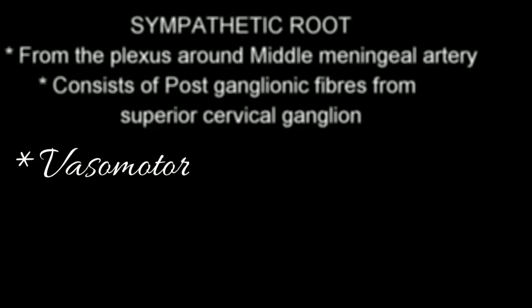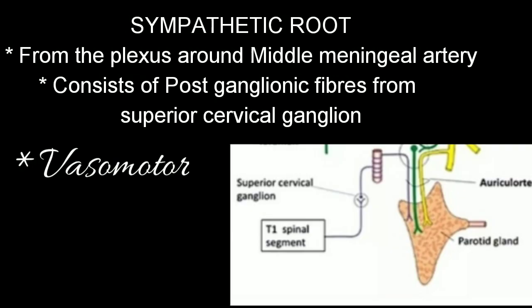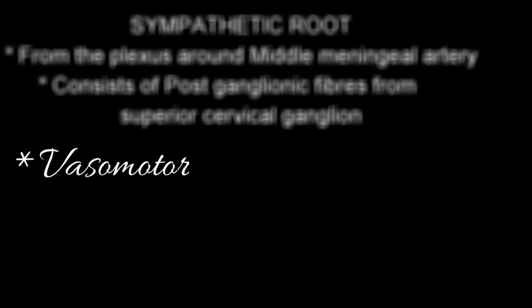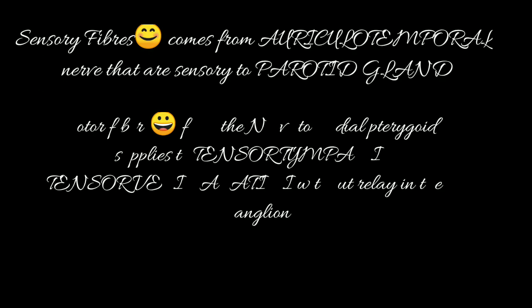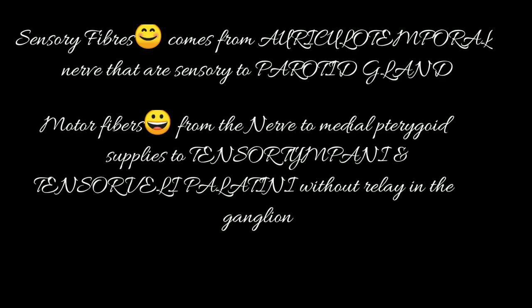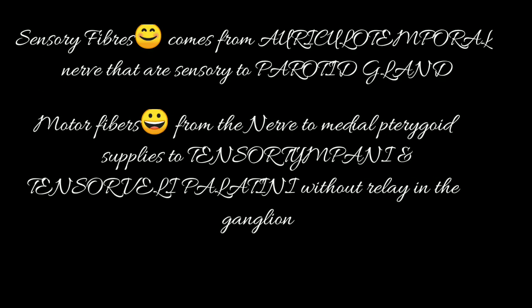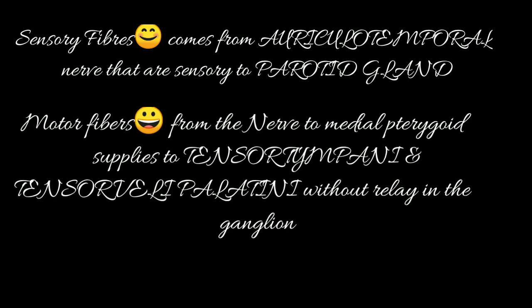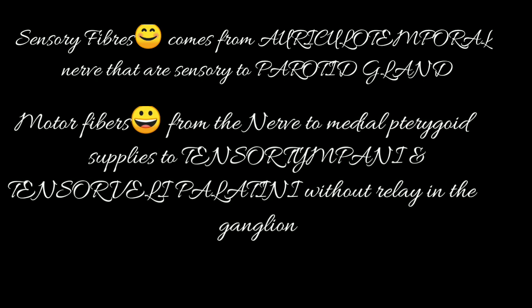The sympathetic root is derived from the plexus around the middle meningeal artery, consisting of postganglionic fibers from the superior cervical ganglion. Sensory fibers come from the auriculotemporal nerve, which is sensory to the parotid gland. Motor fibers are from the nerve to the medial pterygoid.